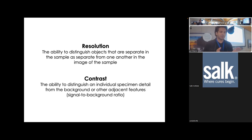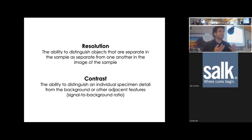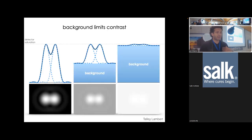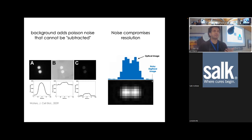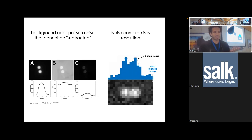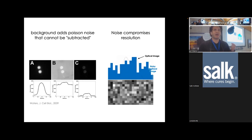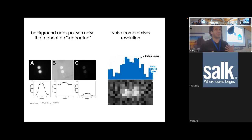Let's distinguish two concepts: resolution and contrast. Resolution is the ability to distinguish two objects next to one another — how far apart can two objects be and you can still tell there are two? Contrast is the difference in signal between your object and the background. They're actually coupled: with no background you can clearly see the object, but with high background it's much less clear. Noise and background compromise the resolution because of Poisson noise, so they affect one another.